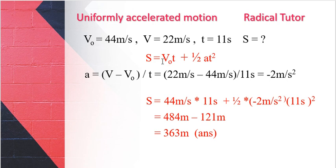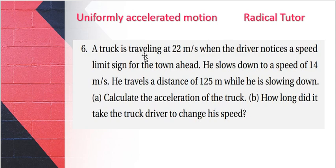Question number three: A truck is traveling at 22 meters per second when the driver notices a speed limit sign for the town ahead. He slows down to a speed of 14 meters per second. He travels a distance of 125 meters while he is slowing down.